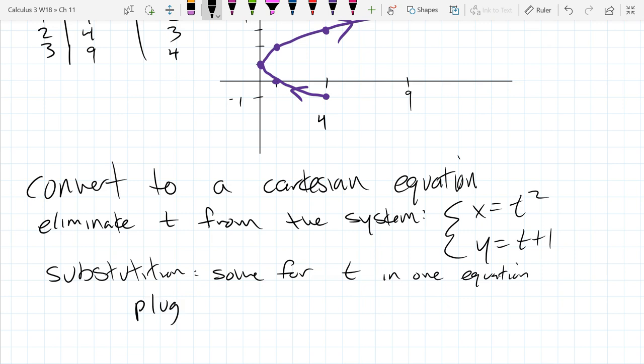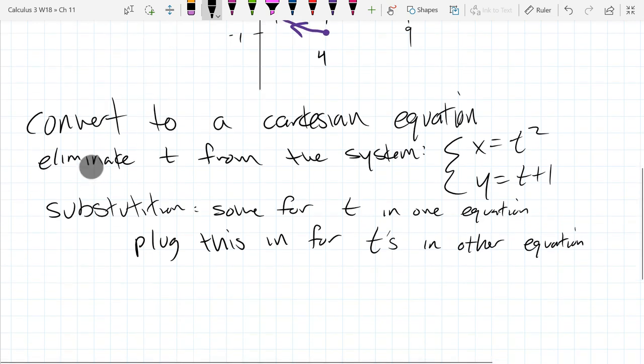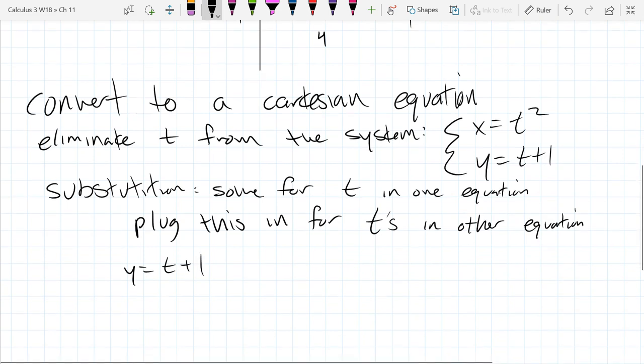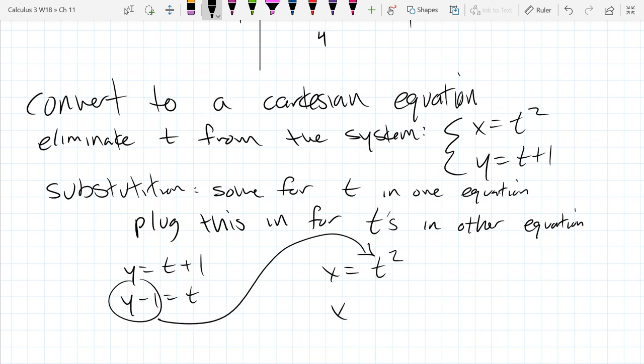Elimination works mainly only if you have... It'll work other times, but generally elimination is better for linear equations. I don't see an easy way to do elimination here. If I had a t squared in the second equation, I might be able to do some elimination carefully, but I don't think I can do elimination here. Let's go substitution. So we're going to solve for t, plug it into the other equation. So easy to solve for t in the second equation, not easy to solve for t in the first equation, because you've got a plus minus square root. So we're going to use substitution on these. So solve for t in one equation. And then plug this in for t's in the other equation.